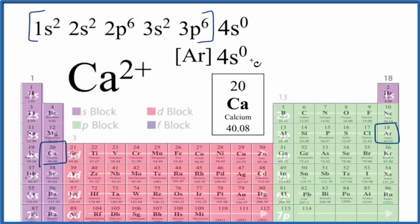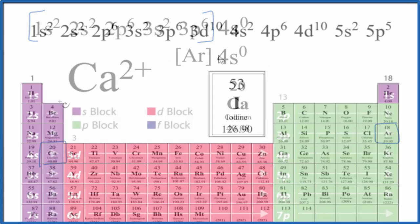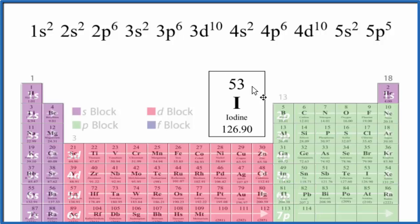If you had a negative ion like N3-, you would just add three electrons to your configuration. Let's try a really long one. For iodine, we have 53 protons and, because it's neutral, 53 electrons. Pause and try to write the condensed electron configuration for iodine.